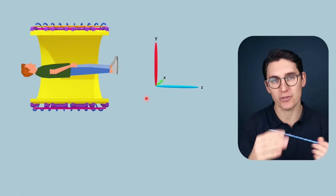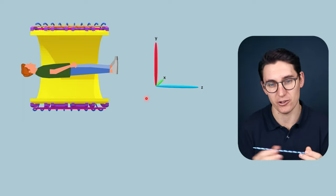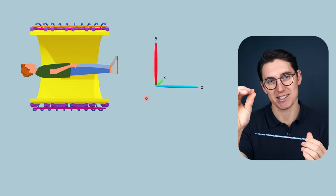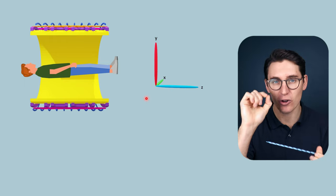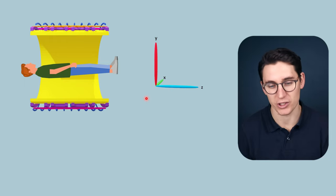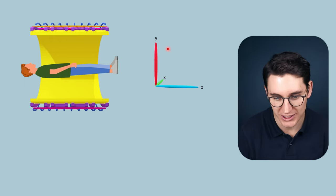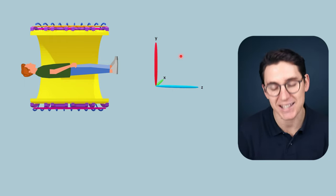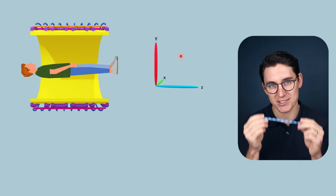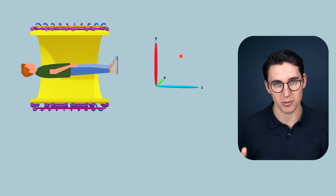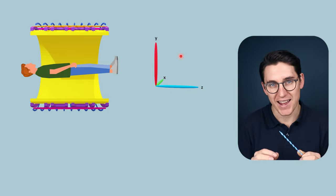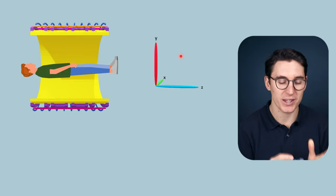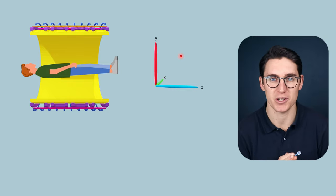If we have three different coordinate values — a z-axis, an x-axis, and a y-axis — and we know those three coordinates on the Cartesian plane as a frame of reference, we can say exactly where that signal is coming from in space within the patient. That's what's known as spatial localization within MRI imaging.